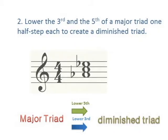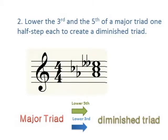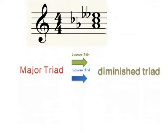A flat, C, E flat is a major triad. Lowering the third and the fifth, we find A flat, C flat, E double flat is a diminished triad.